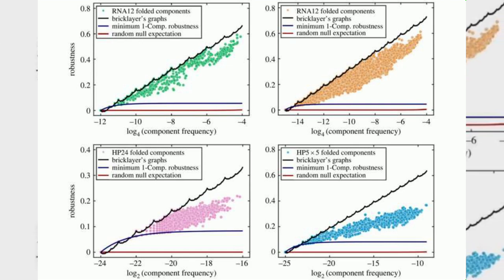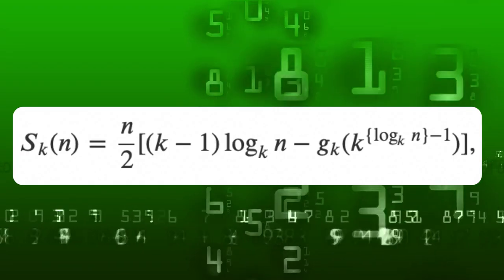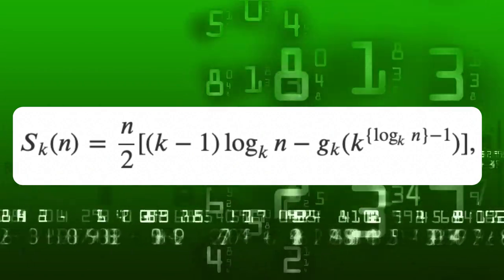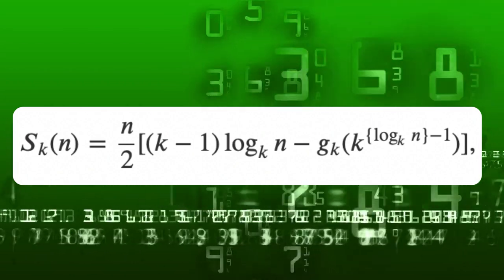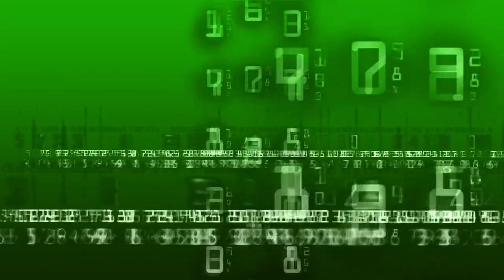Intriguingly, this relationship incorporates the sums-of-digits function, denoted as s_k(n), which sums the digits of a natural number n in base k. This discovery offers a new perspective on the nature of robustness and its connection to fundamental mathematical concepts.